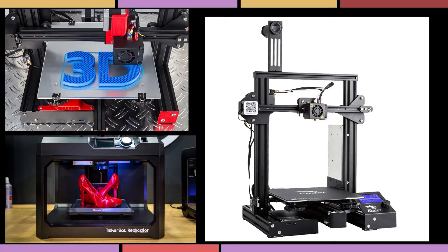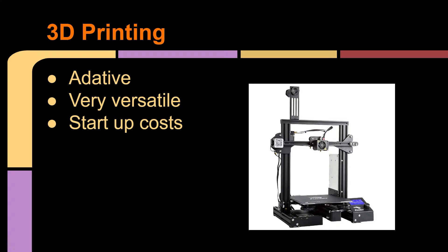Based on the following images that we see right now on the screen, we are going to be talking about 3D printers and how 3D printers are going to relate to programming. But first things first, what is a 3D printer? 3D printers are adaptive — they can print nearly anything that you want in plastic, and that plastic can actually vary as well.